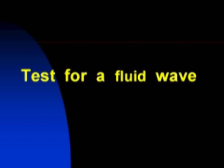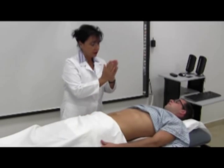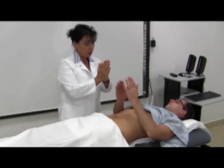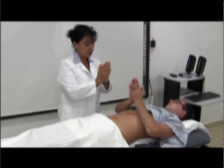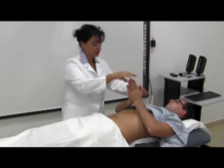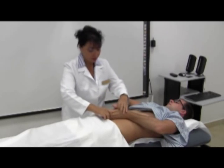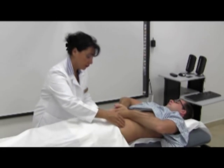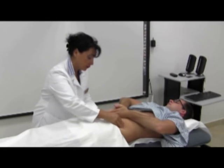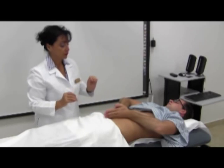Test for a fluid wave: ask the patient to press the edges of both hands firmly down the midline of the abdomen. This pressure helps to stop the transmission of a wave through fat. While you tap one flank sharply with your fingertips, feel on the opposite flank for an impulse transmitted through the fluid.